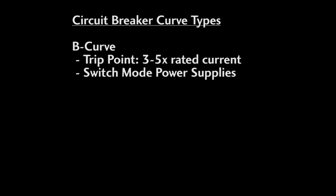Circuit breakers are rated using a curve type. A B curve type circuit breaker can handle 3 to 5 times the rated current before it trips. They are great for small switch mode power supplies where you need to be able to handle the inrush current but need to be in a couple amp range while operating.